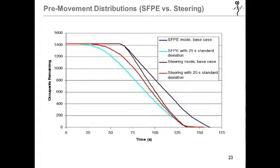Here you see the occupants remaining with Pathfinder versus SFPE mode where in steering mode you see the difference in the base case results as the slope is greater meaning that the exit flow is also greater for steering mode, while the intermediate queuing is seen with the bright red line where it takes longer to approach the slope. However, at the end these both converge with the standard deviation because of the high pre-movement times.